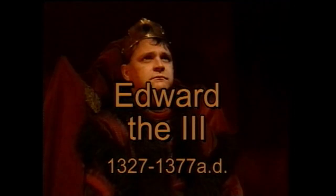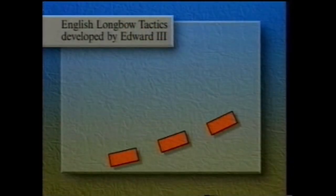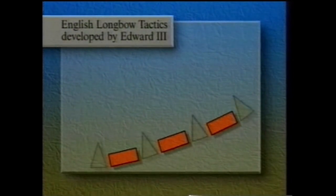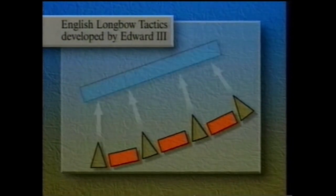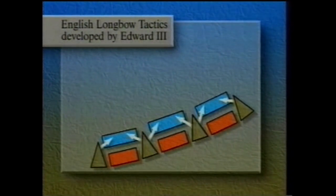It was left for Edward III to retrieve the reputation of English arms. Fighting the Scots at Halidon Hill in 1333, Edward divided his army into three units — or battles — of dismounted men-at-arms, each with two wings of archers drawn up to form a protruding wedge. This wedge could fire first into an attacking enemy's front ranks, and then, as it closed for the melee, into its flanks. When they attacked, the Scots were shot to pieces.